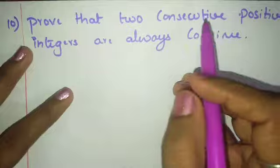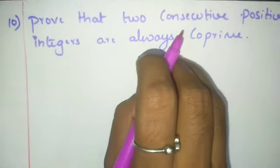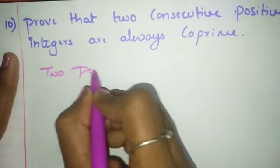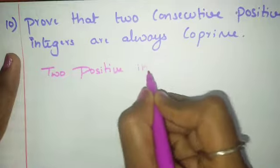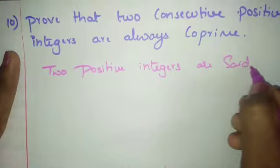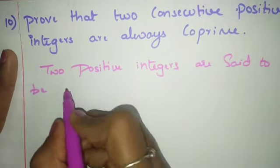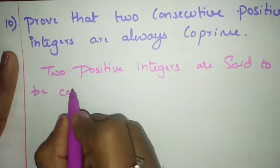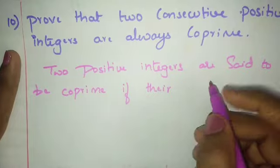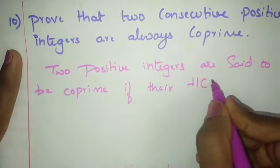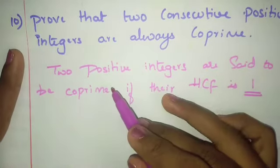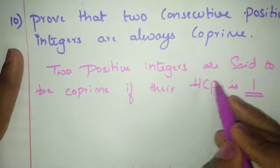Tenth sum: prove that two consecutive positive integers are always co-prime. Two positive integers are said to be co-prime if their highest common factor is 1.